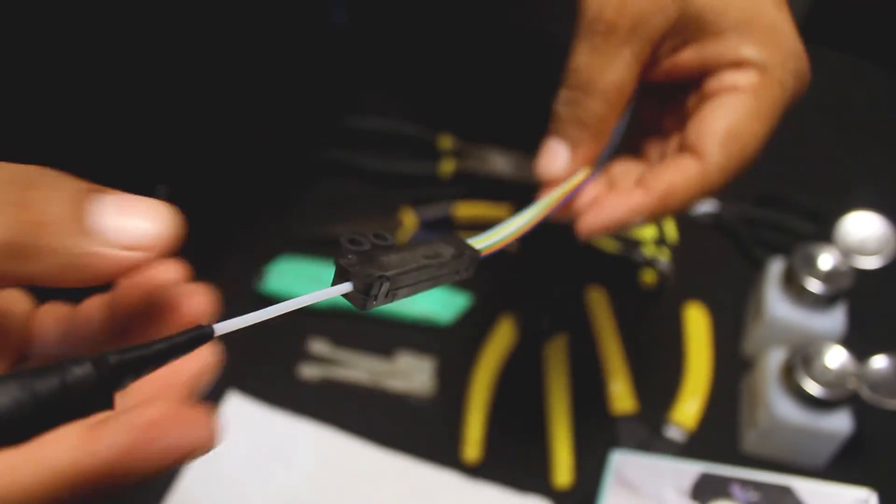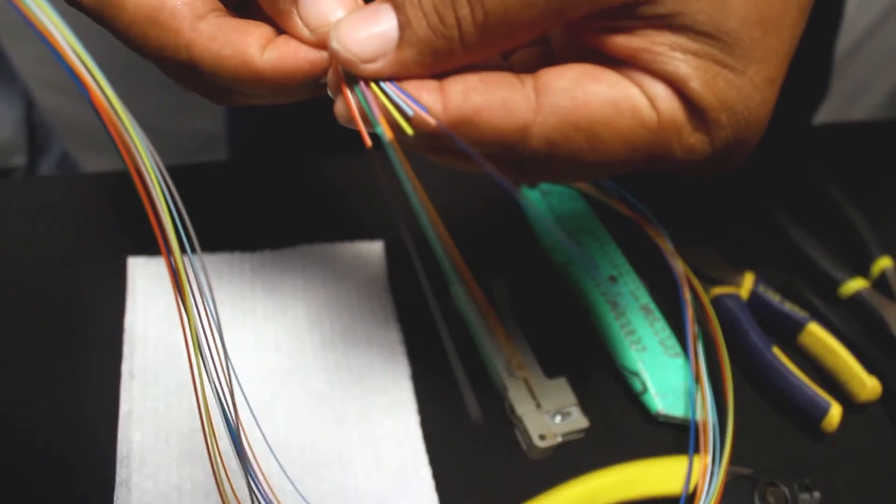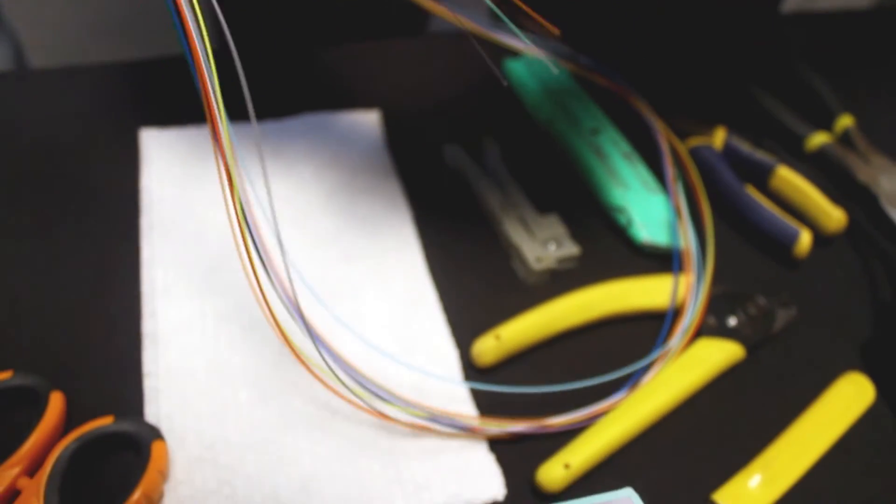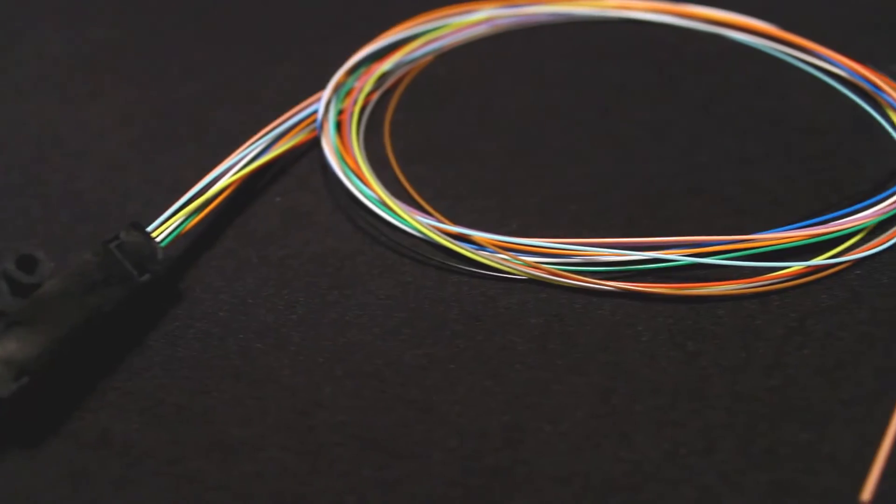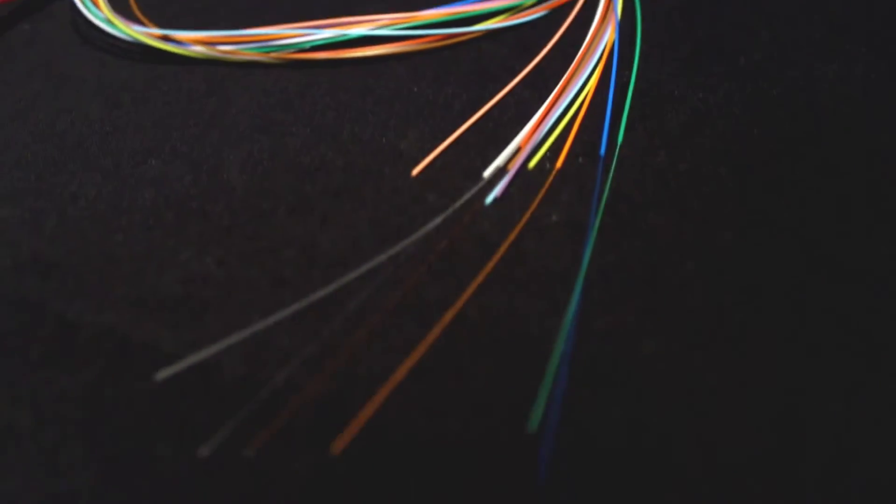As you can see, the fibers must exceed at least 3 to 4.5 centimeters out of the tube ends. Once you're done, your fibers are ready to be terminated into connectors following your manufacturer's instructions, be spliced, or installed into a patch panel.